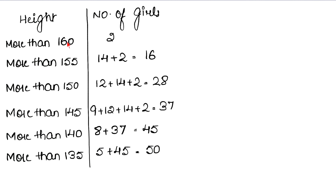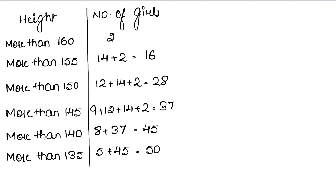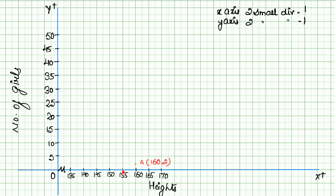The first point is more than 160, which corresponds to 2 girls. On the graph, 160 on X axis and 2 on Y axis — that's 4 boxes up — gives us point A at (160, 2). Next, more than 155 corresponds to 16, so point B is at (155, 16).